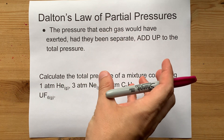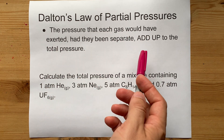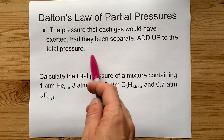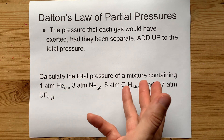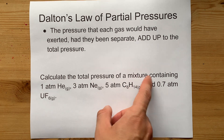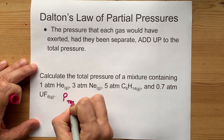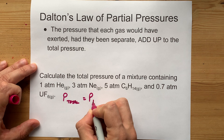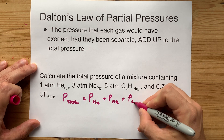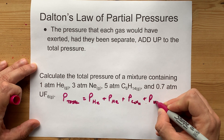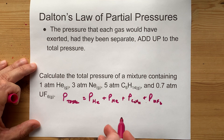Dalton's Law of Partial Pressures is about mixtures of gases. The idea is that the total pressure of the mixture is the sum of all the pressures each gas would have exerted had they been separate. The classic question is calculating the total pressure of a mixture when you're given the pressure of each of the components. The total pressure is the pressure of gas one plus gas two plus gas three plus gas four — the total is the sum of each separately.